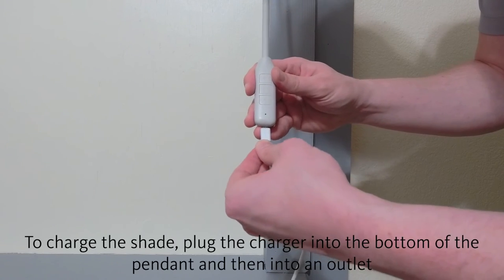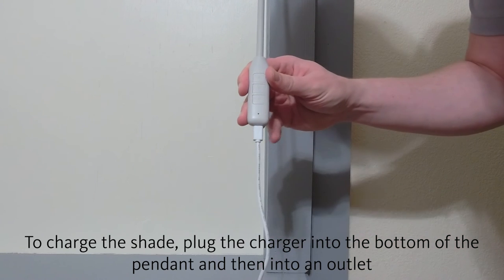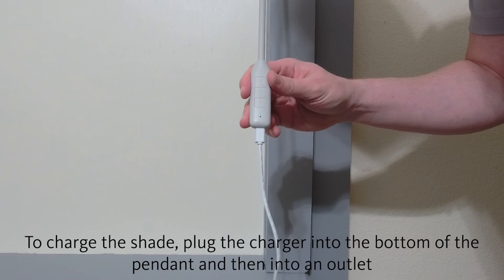To charge the shade, simply connect the micro USB charger to the charge port at the bottom of the pendant, then plug the charger into an outlet.